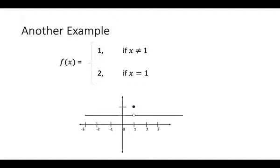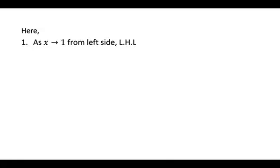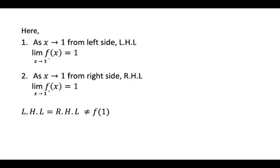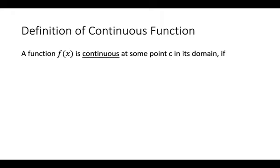Here, as x tends to 1 from the left side, f(x) = 1, and as x tends to 1 from the right side, f(x) = 1. So for continuity of a function, the left hand limit must equal the right hand limit, and both must equal the value of f(x) at that point. A function is continuous at some point c in its domain if: limit as x→c⁻ of f(x) = limit as x→c⁺ of f(x) = f(c).